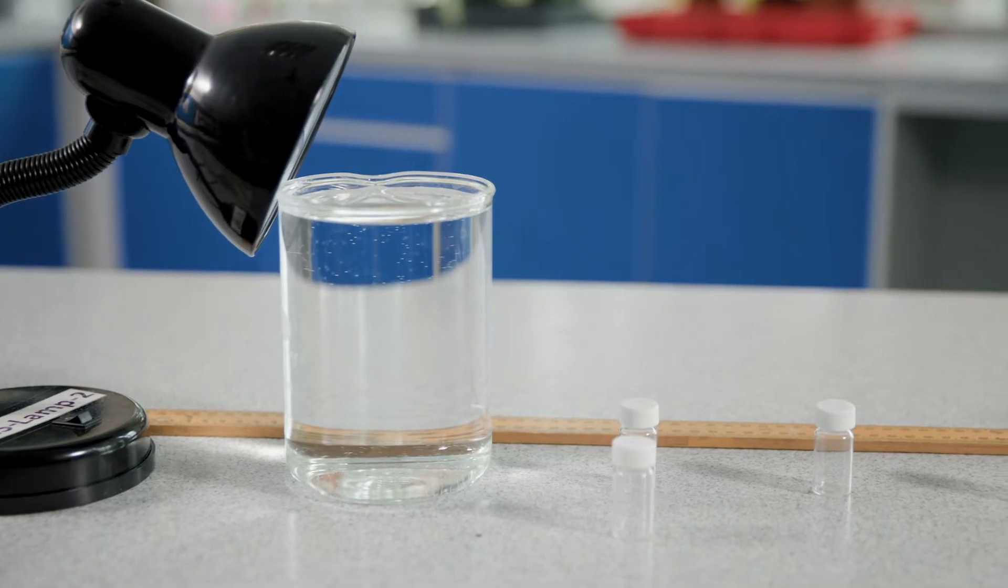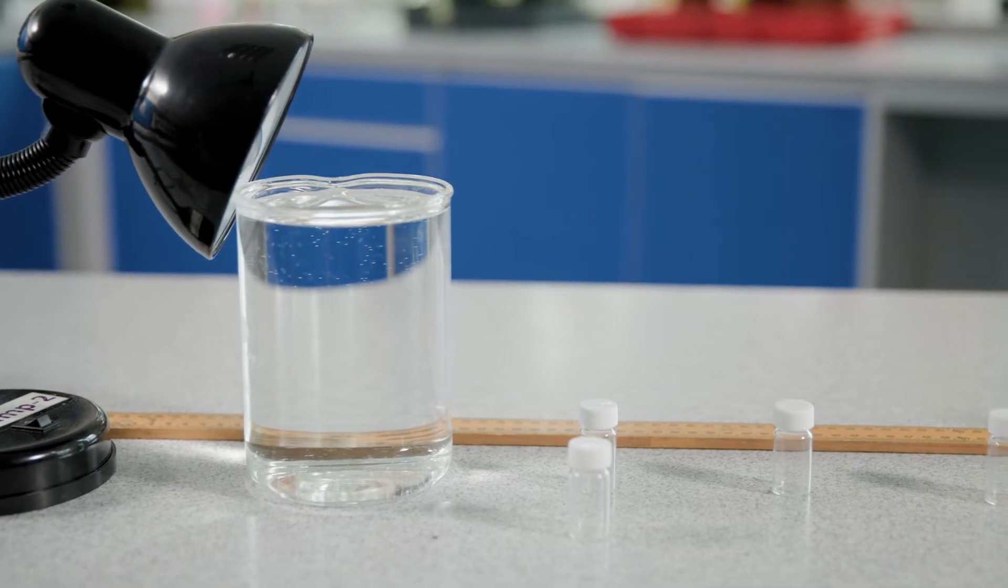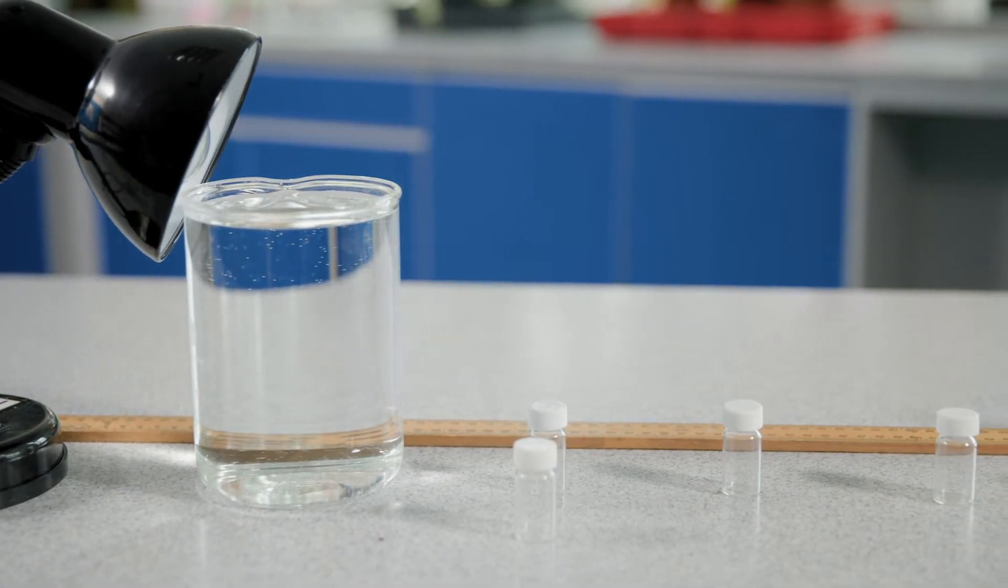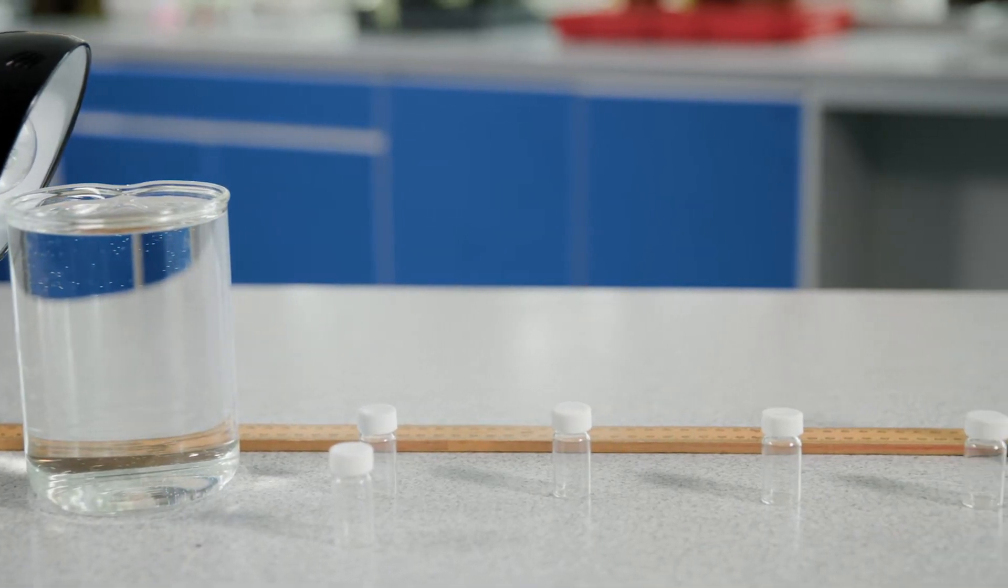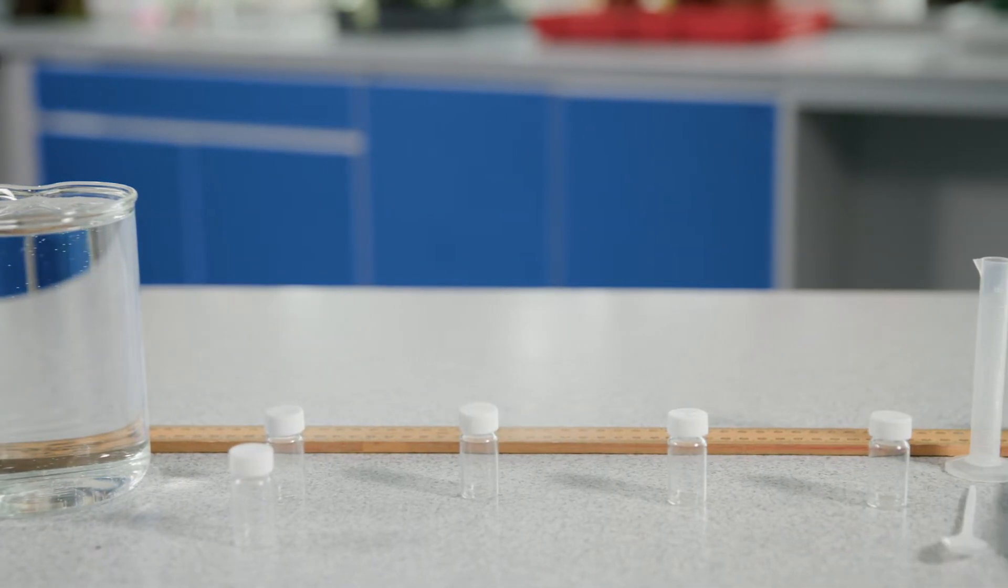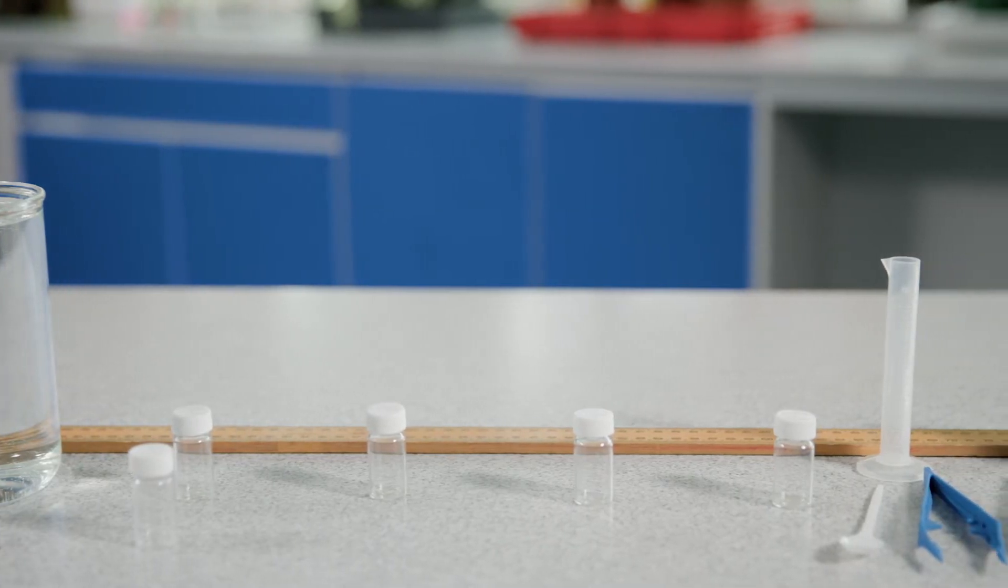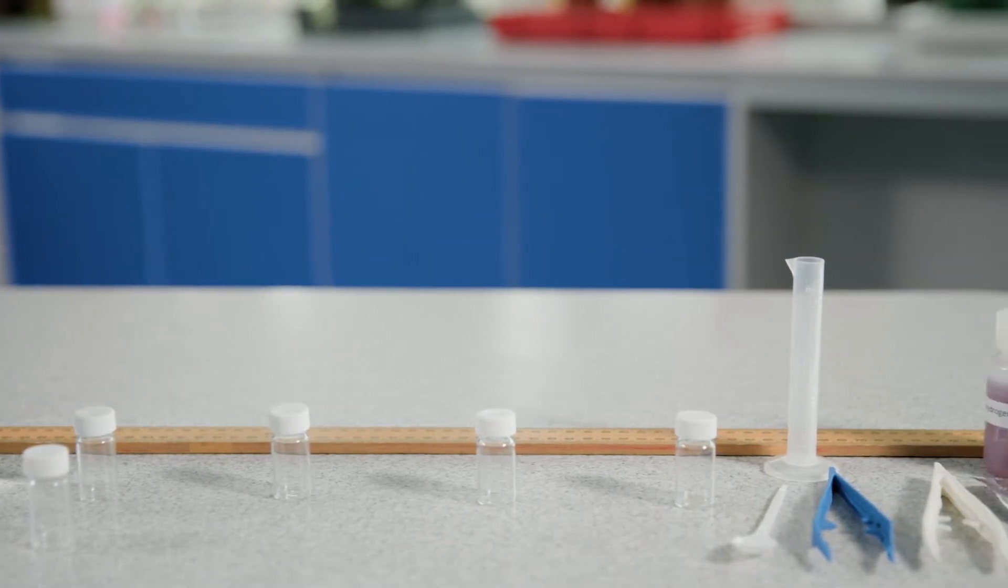Before the experiment you need to decide the different distances you are going to investigate between the algae and the lamp. In this instance I'm going to use 30, 40, 50, and 60 centimeters, but you can decide your own.